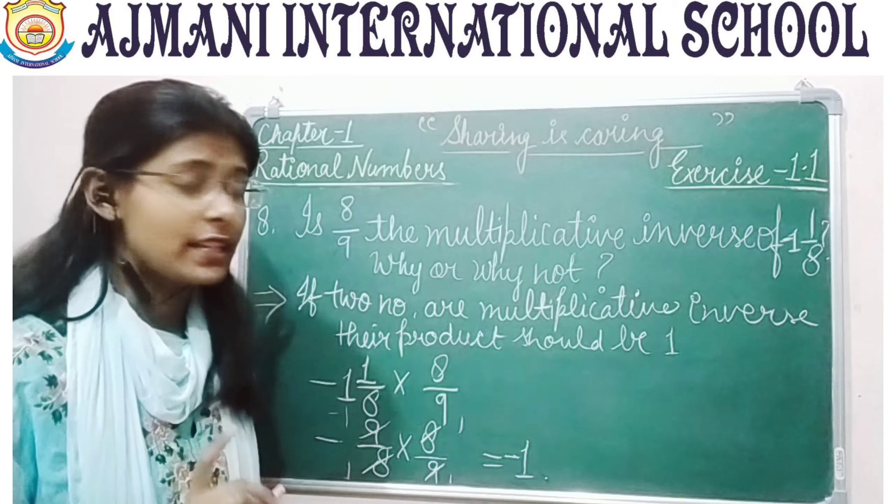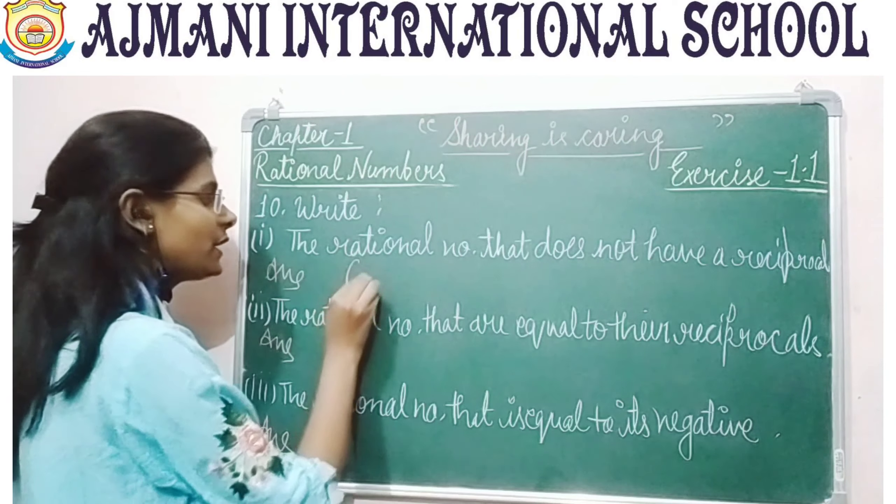Try to do question number 9 by your own, where you have to convert 0.3 (a decimal number) into a rational number. Question number 10 asks: write the rational number that does not have a reciprocal. The answer is 0, because 0 is the only rational number which cannot be written as 1 upon 0 or any number upon 0.